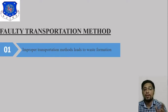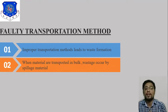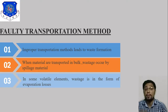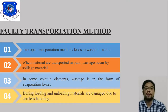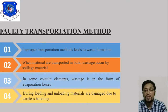The first factor is faulty transportation method. Improper transportation methods lead to waste formation. When materials are transported in bulk, wastage occurs by spillage. For volatile elements, such as petrol and diesel, wastage occurs in the form of evaporation losses. During loading and unloading, materials are damaged due to careless handling.